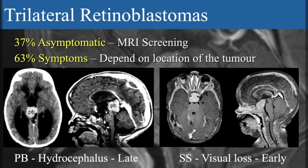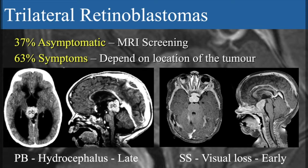There is a difference in clinical presentation, not just in location, between the pineal and the suprasellar tumors. The pineal tumors have more often been symptomatic because they develop a little bit later and are not always spotted at the same time as the retinal tumors. They lead to obstructive hydrocephalus that develops general symptoms in the child, such as nausea, lethargy, and some neurological symptoms. Whereas those located in the suprasellar area may lead to early visual loss because of compression of the optic chiasm, and they are detected faster, often at a time when there is still active tumor in the retina.